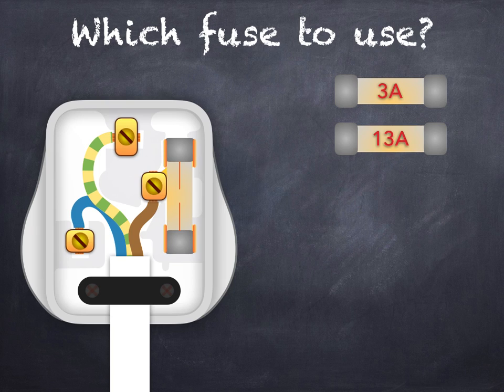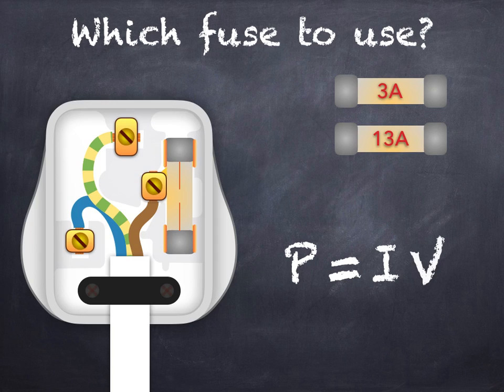In this video we'll be looking at the ratings plate of 3 devices. This tells you the power rating and operating voltage of the device. And we'll use this equation, power is equal to current times voltage, to calculate the current in the device, rearranging the equation like so.